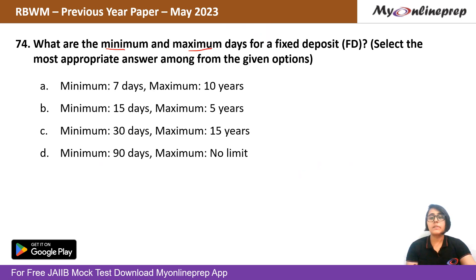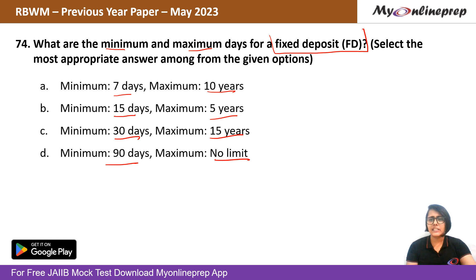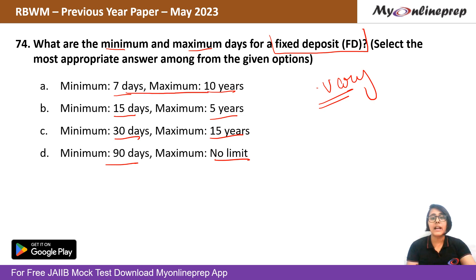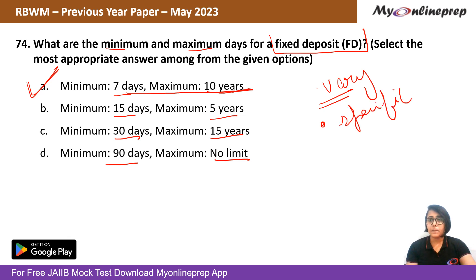Question 74: What are the minimum and maximum days for a fixed deposit? Options: (A) minimum 7 days, maximum 10 years; (B) minimum 15 days, maximum 5 years; (C) minimum 30 days, maximum 15 years; (D) 90 days to no limit. The duration of fixed deposits varies from bank to bank, but the most commonly found range is a minimum of 7 days to a maximum of 10 years. The right answer is option A, subject to specific terms and conditions of the offering bank.